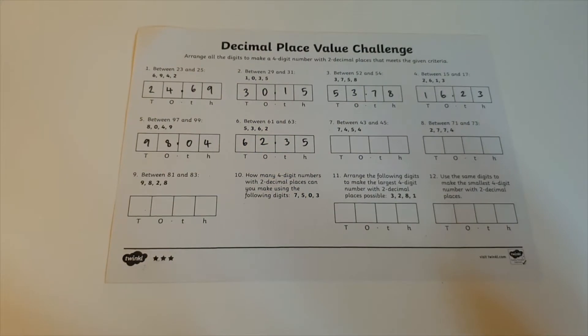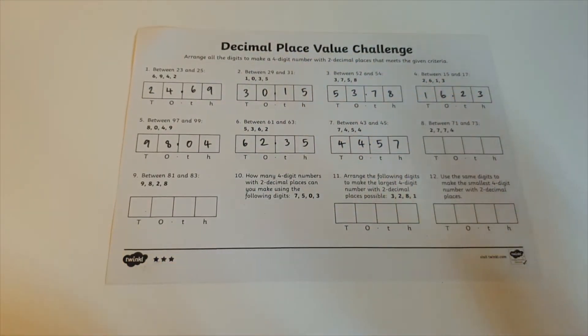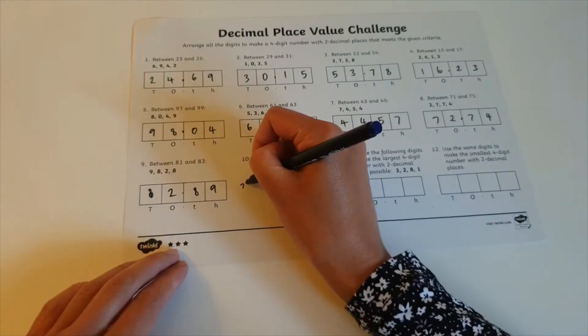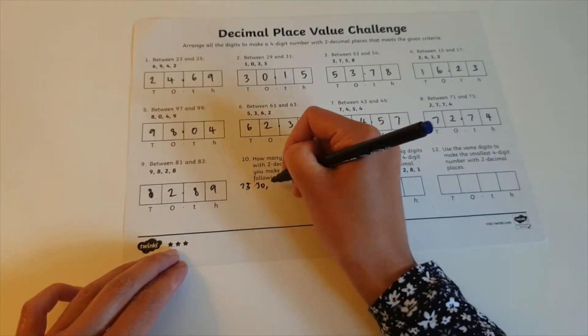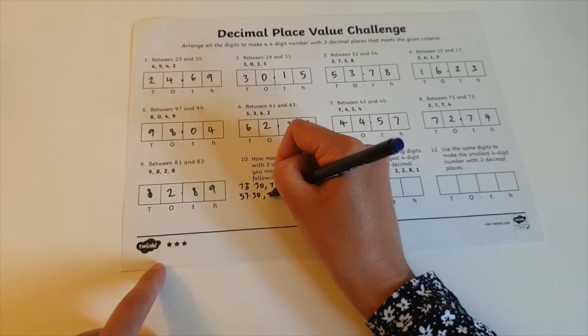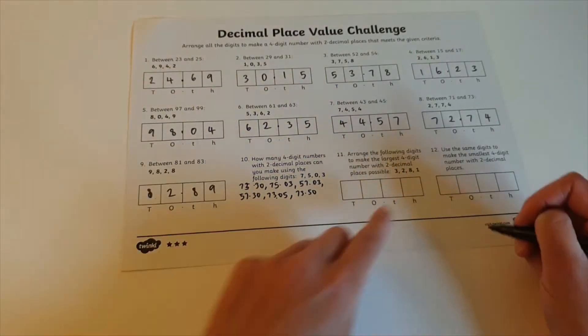These activity sheets have been differentiated from one to three stars, three stars being the most challenging. By using these differentiated worksheets you can help your class understand numbers up to two decimal places as well as comparing which are greater and smaller in value.